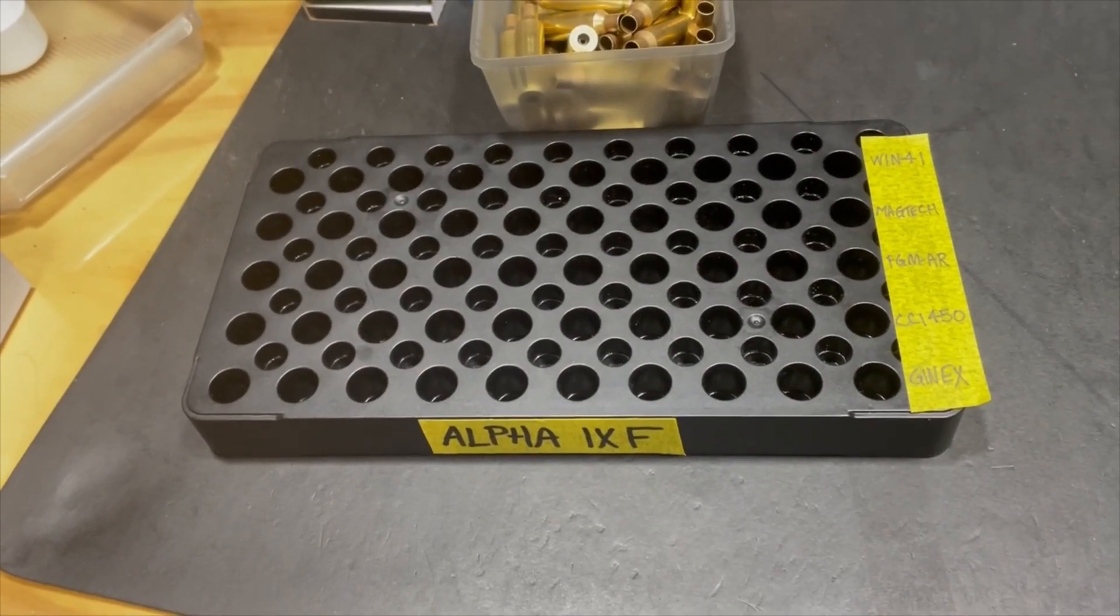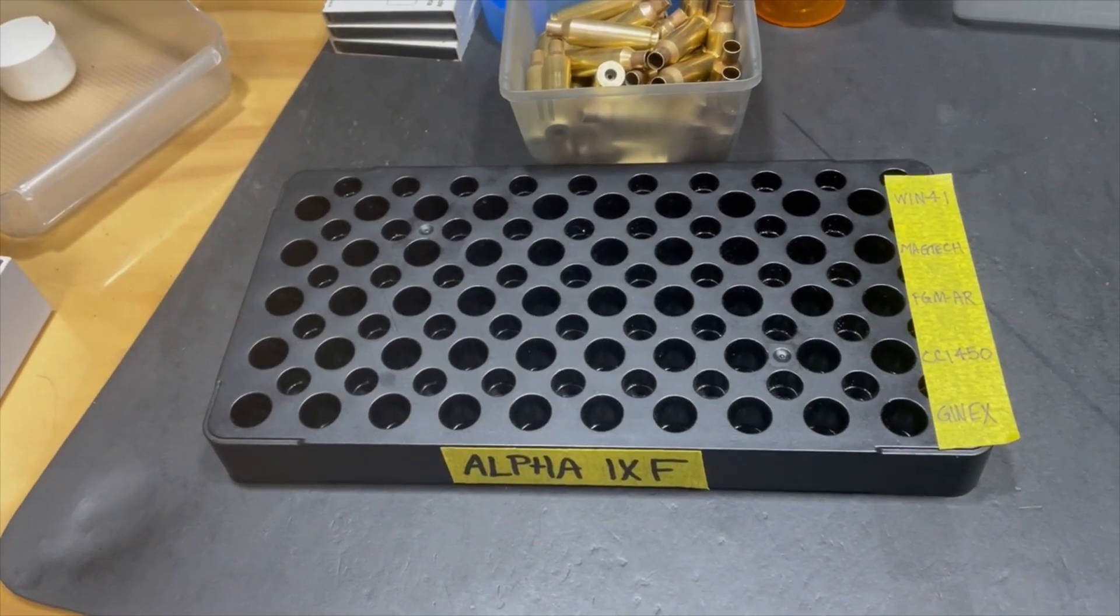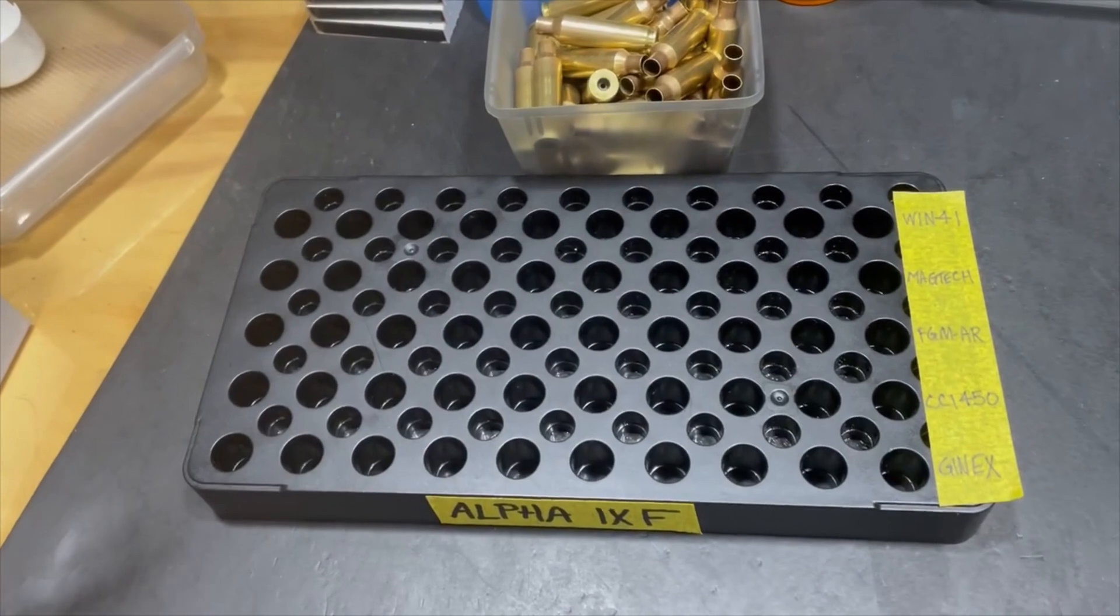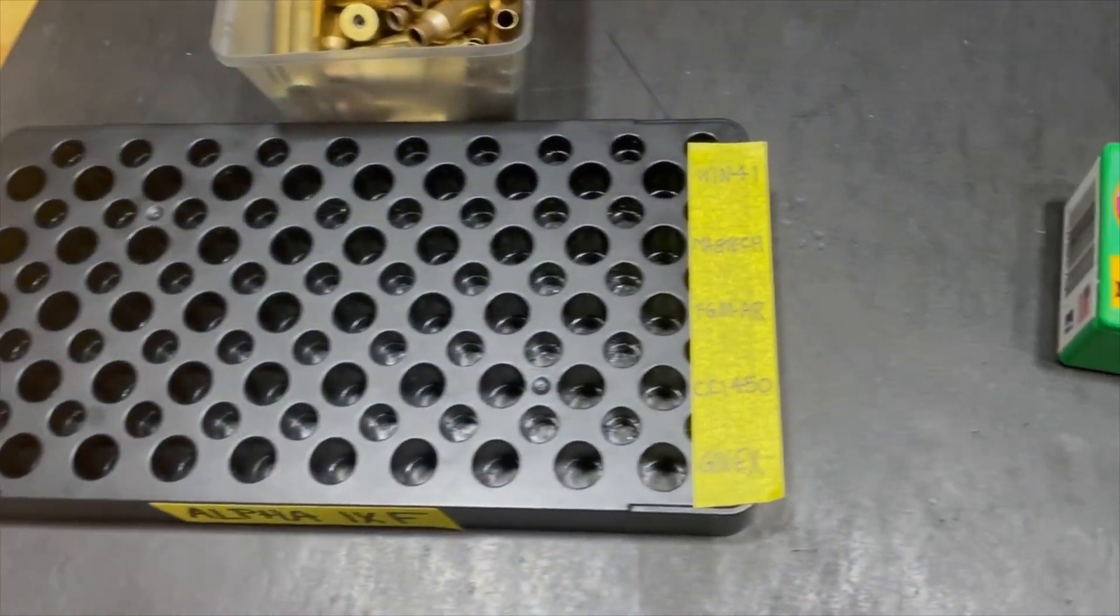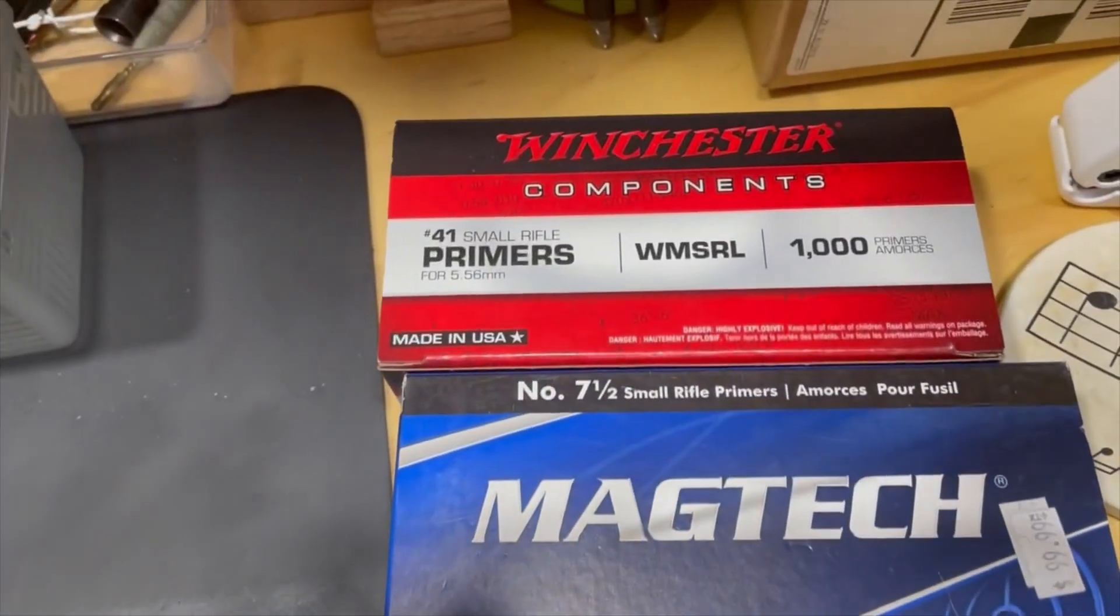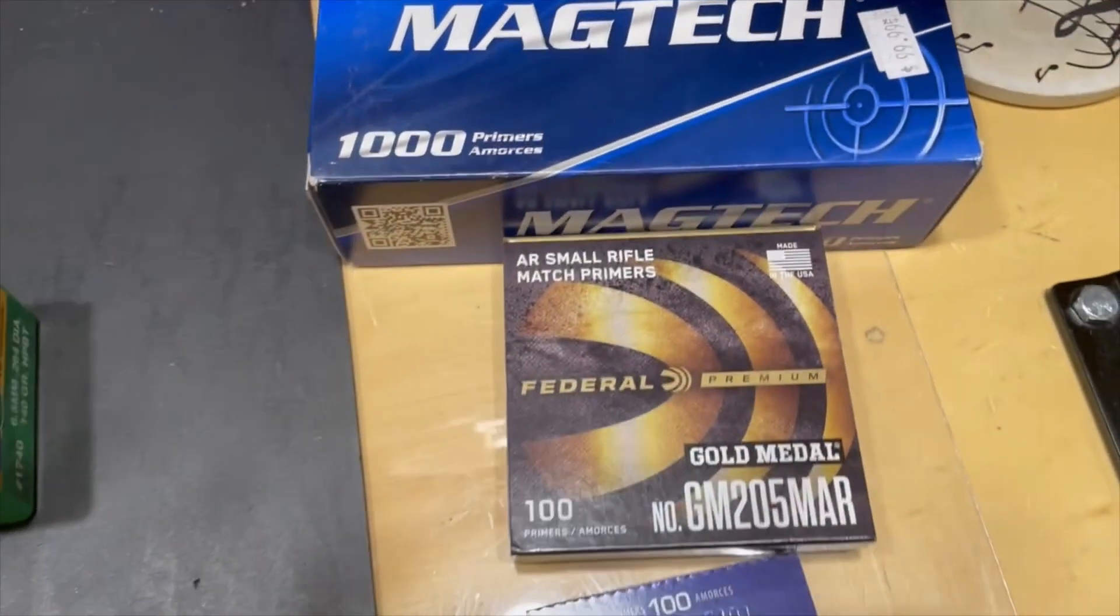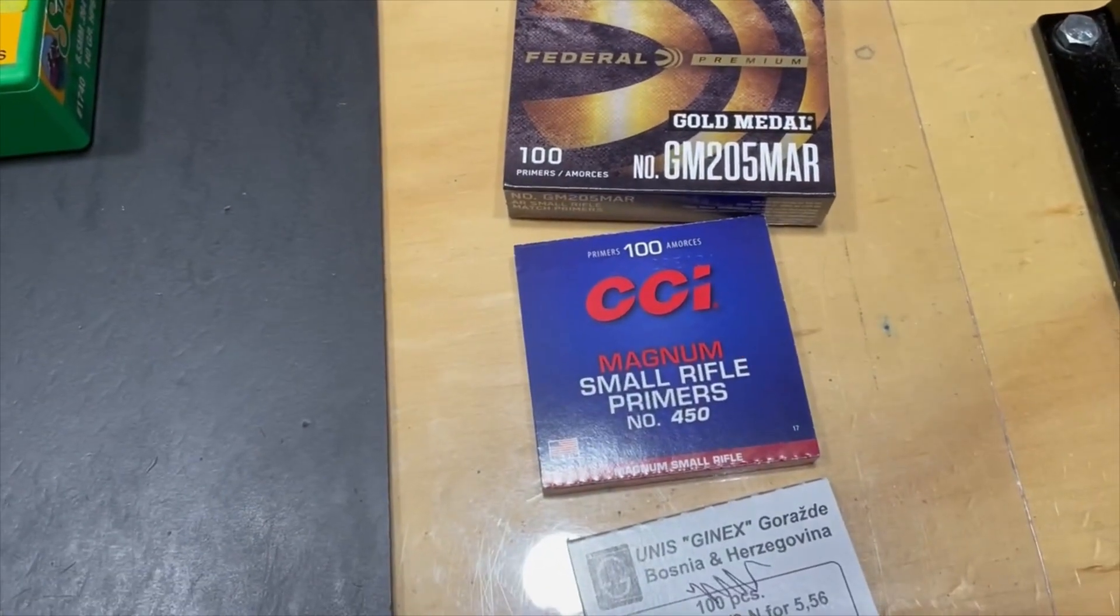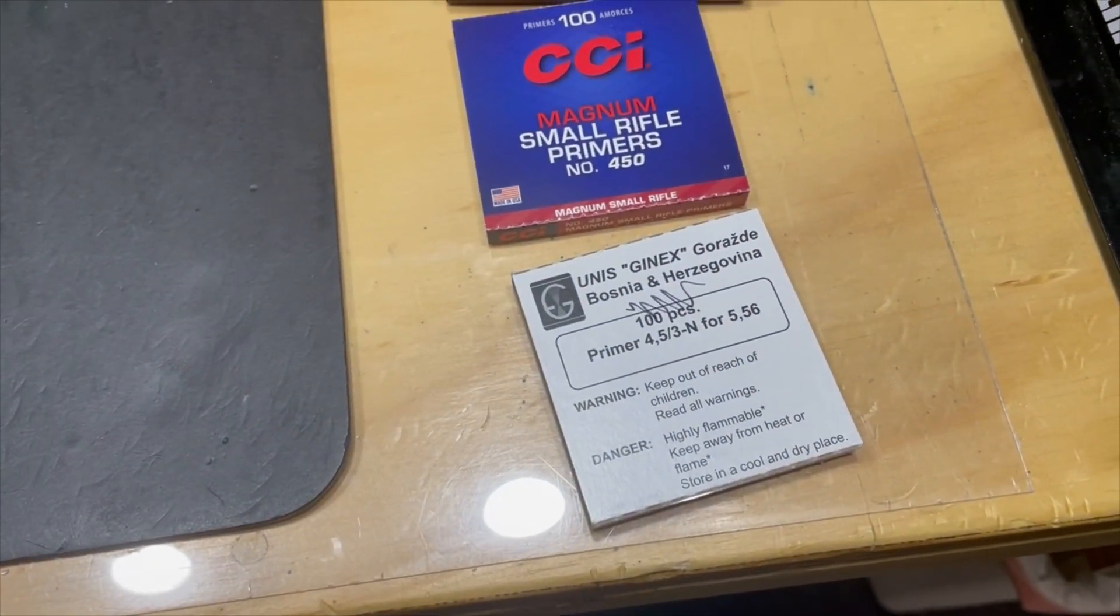For this load development, I'll be shooting 6.5 Creedmoor using Alpha once-fired brass. The test will be shooting two 5-shot groups with different primers: Winchester 41 Small Rifle Primers, Magtech, Federal AR Gold Medal Match Primers, CCI 450, and Gen X for 5.56.